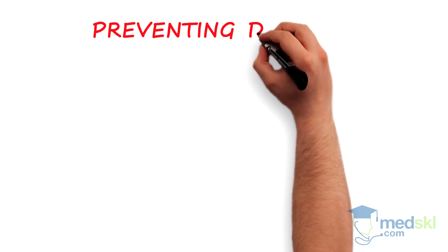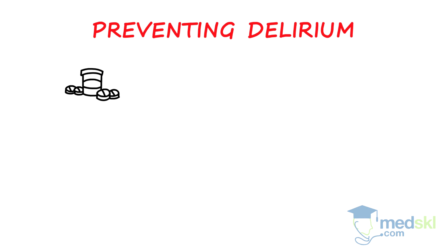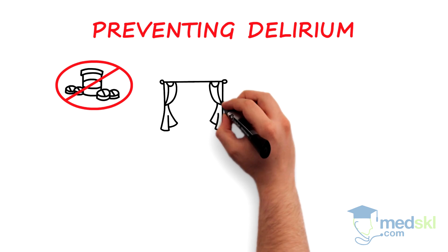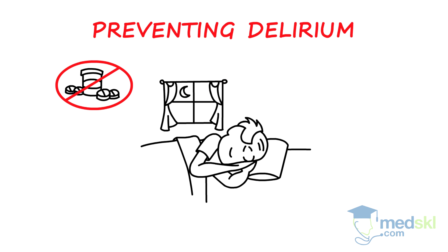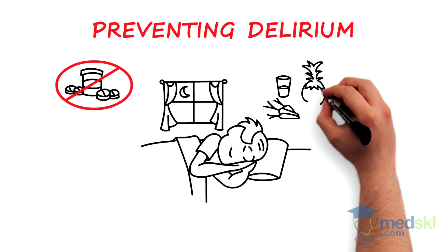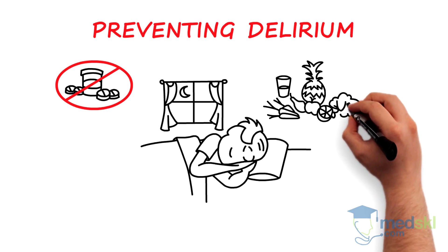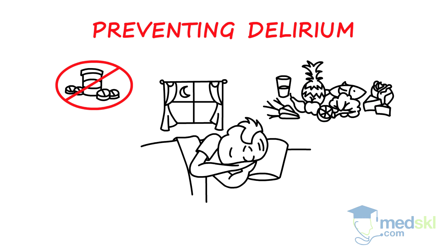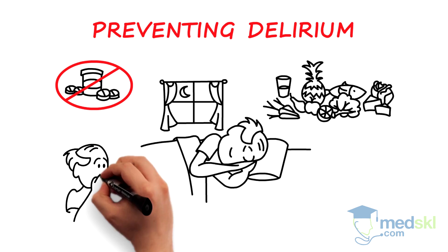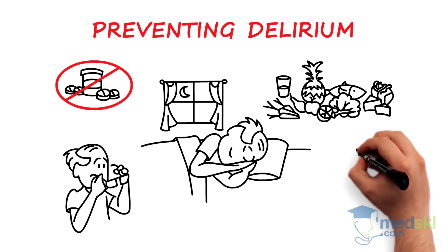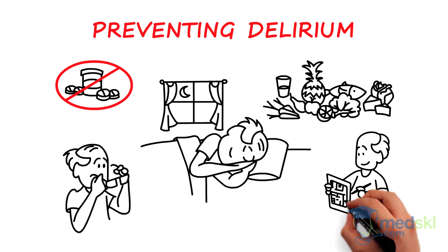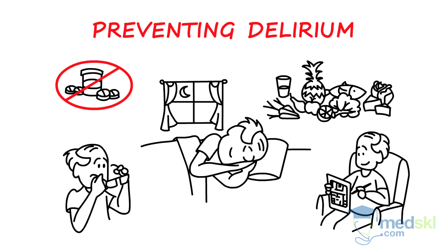Delirium is often preventable. Preventive strategies include avoiding or limiting deliriogenic medications, non-pharmacological interventions for healthy sleep, good nutrition and hydration, correcting hearing and visual impairment, as well as facilitating cognitive and interpersonal stimulation.